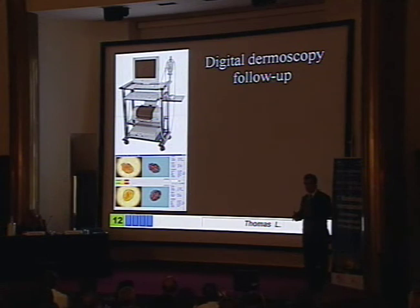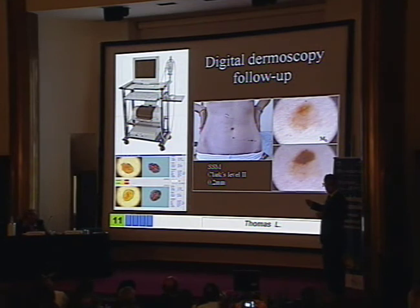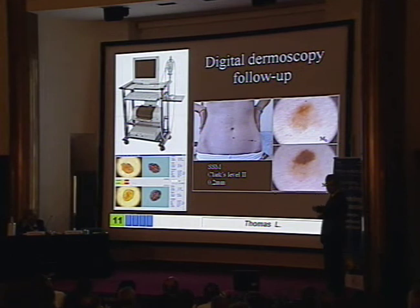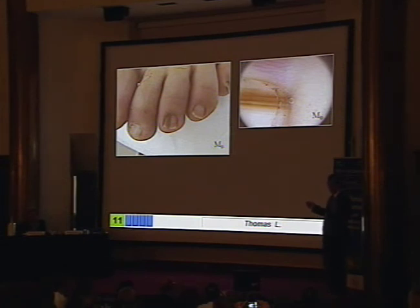Of course, there are doubtful cases, and sometimes you don't want to go directly to biopsy. You can do the same as on regular skin — follow high-risk patients. For example, a patient who had three melanomas and a CDKN2 mutation: we followed many lesions, and one was proven to be melanoma because it changed over time. The same digital follow-up strategy applies to the nail, but the time course is much longer.